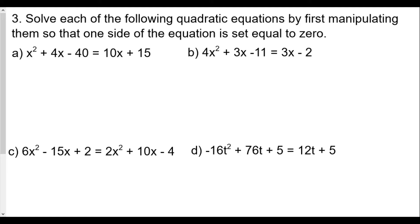Now for question number three, we're asked to solve each of the following quadratic equations by first manipulating them so that one side of the equation is set equal to zero. We always want to set our quadratic equation to zero, but at the same time, making sure whatever our variable squared is positive.